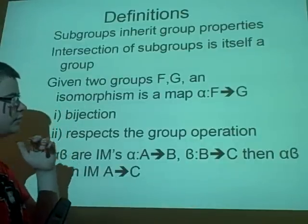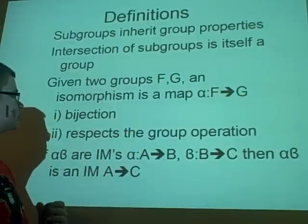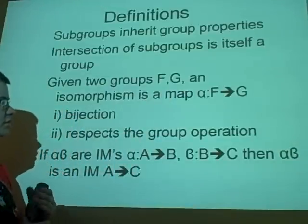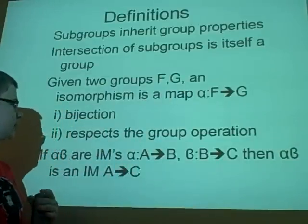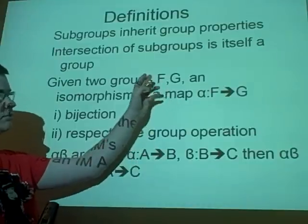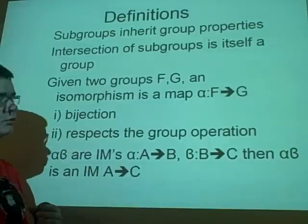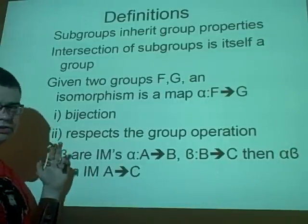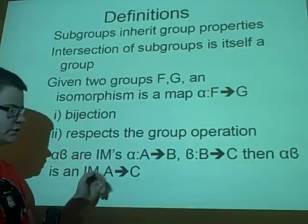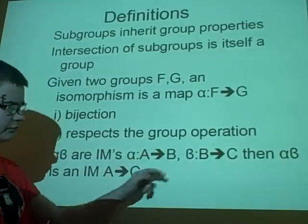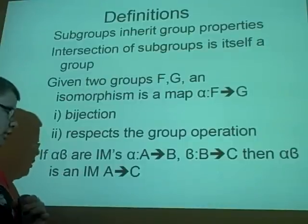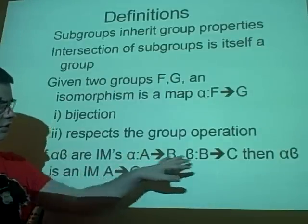Isomorphisms: if you have two groups, F and G, and you're mapping from one to the other — that's all isomorphisms are — then it's a bijection, so it's one-to-one, and it keeps the group operations. Say they multiply, then the isomorphism will multiply. He uses the notation IM, so if alpha and beta are isomorphisms, and alpha maps from A to B, and beta maps from B to C, then alpha and beta is an isomorphism from A to C — you can kind of see where that comes from.